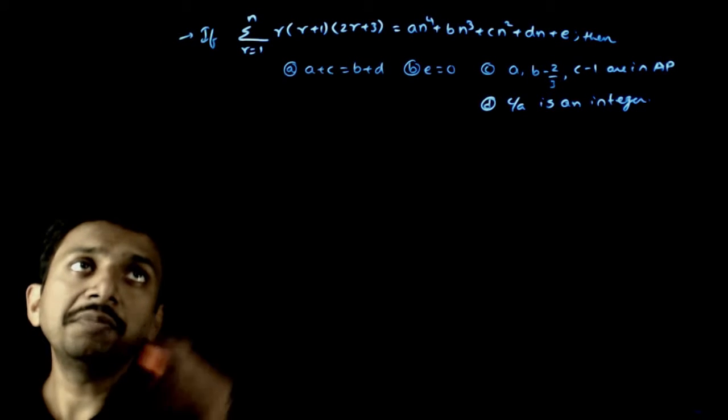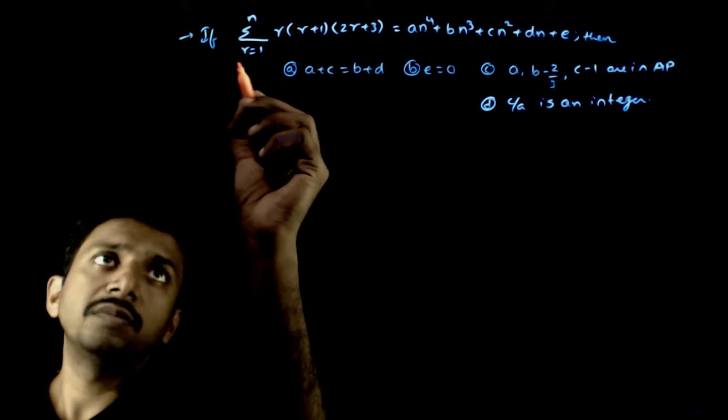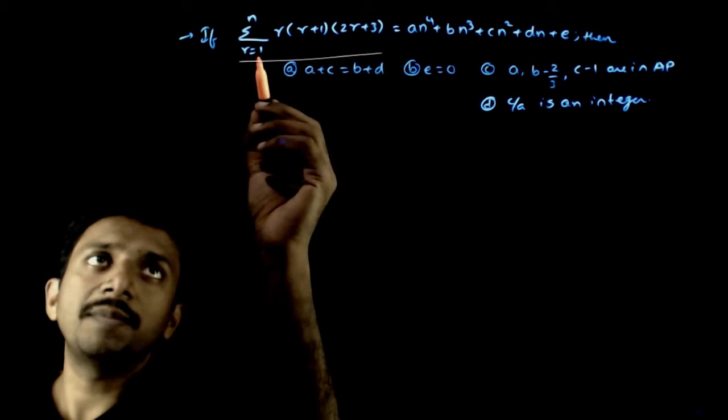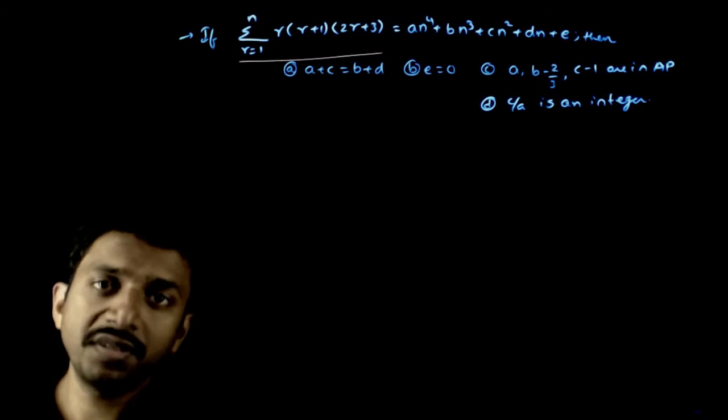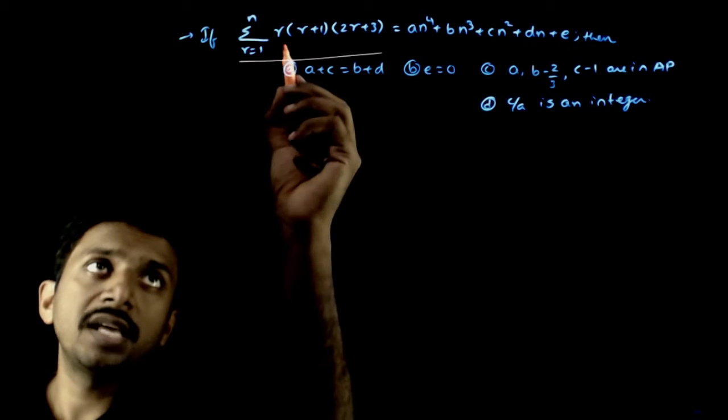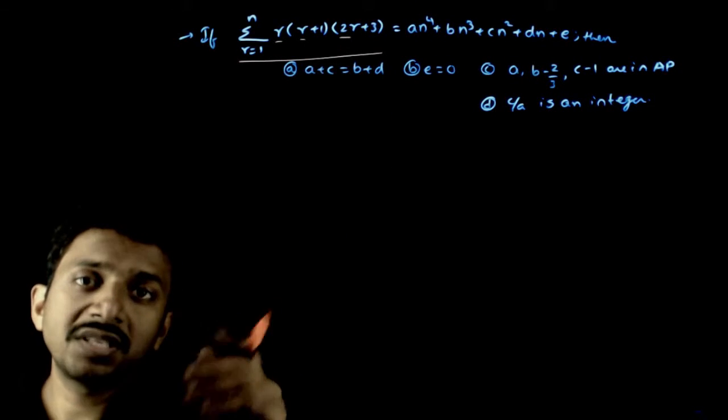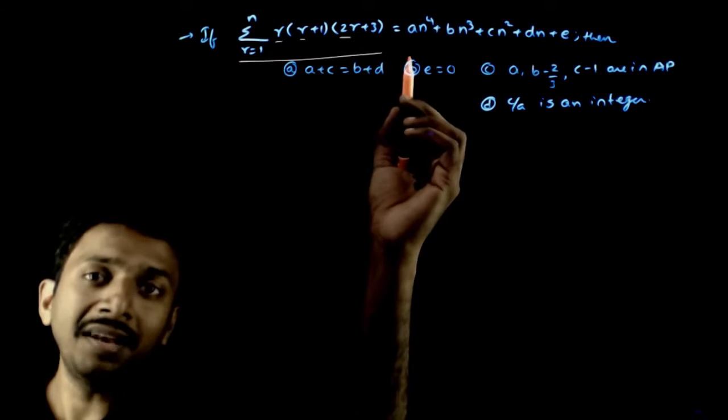Welcome students. This question asks you to find sigma r equals 1 to n, r into r plus 1 into 2r plus 3, and this is a cubic in r. So obviously, this sum will give you a fourth degree in n.